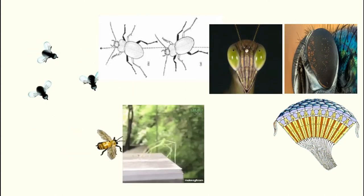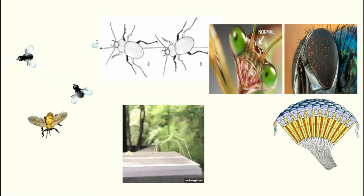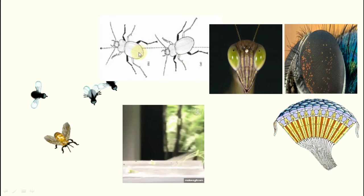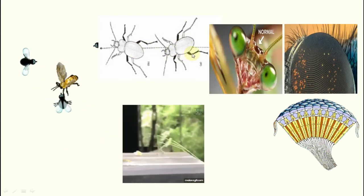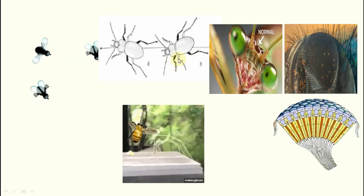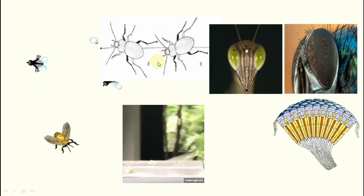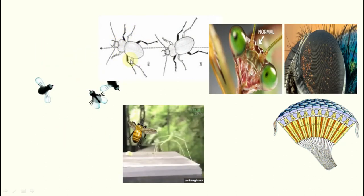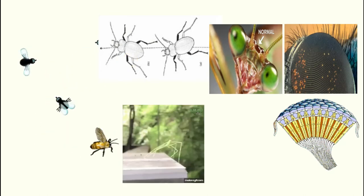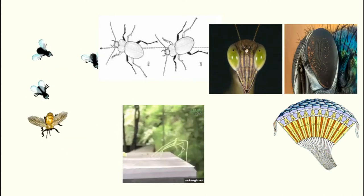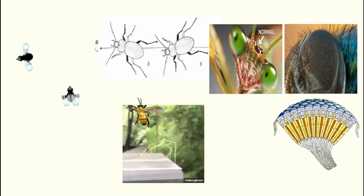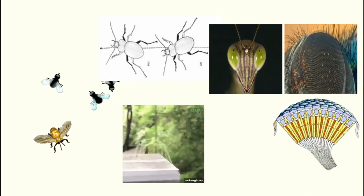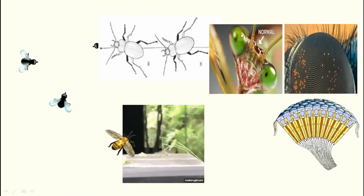Another advantage of six legs is stability. While walking, insects use a tripod fashion — three legs in a resting phase while the other three move forward, then they alternate. This tripod movement gives them more stability for walking smoothly without falling, and that is a major advantage of having six legs.